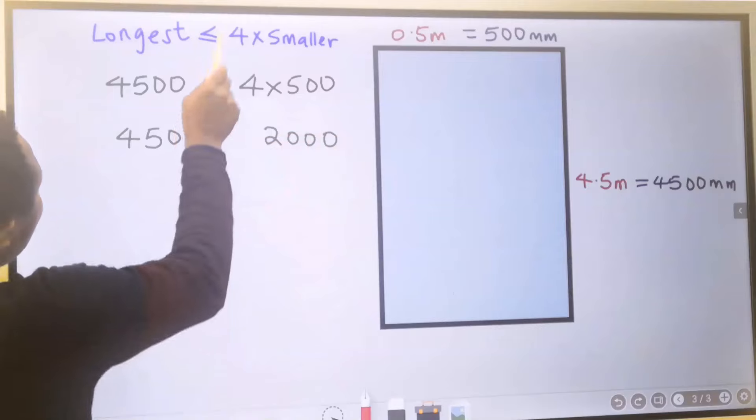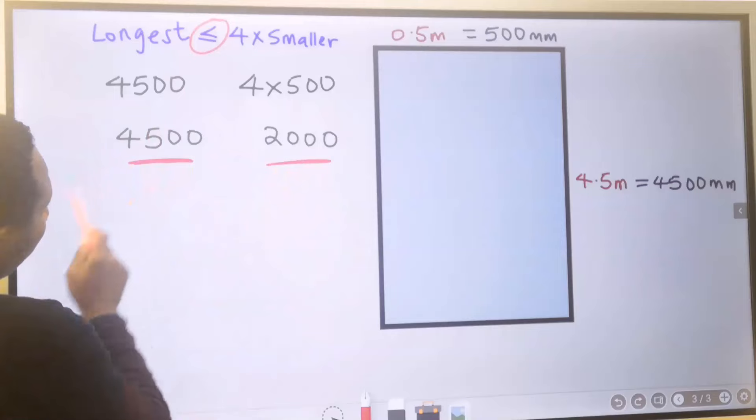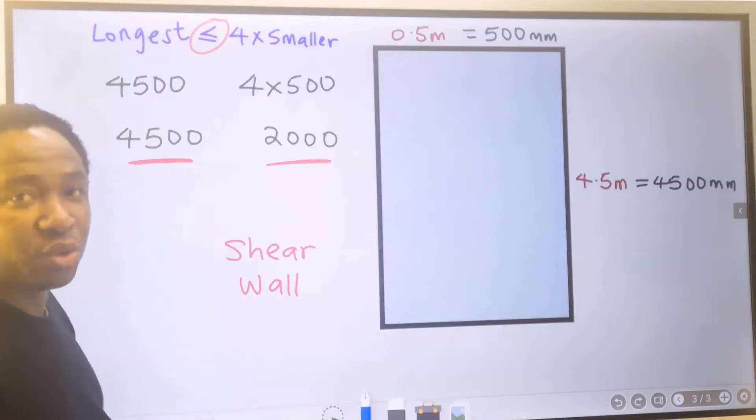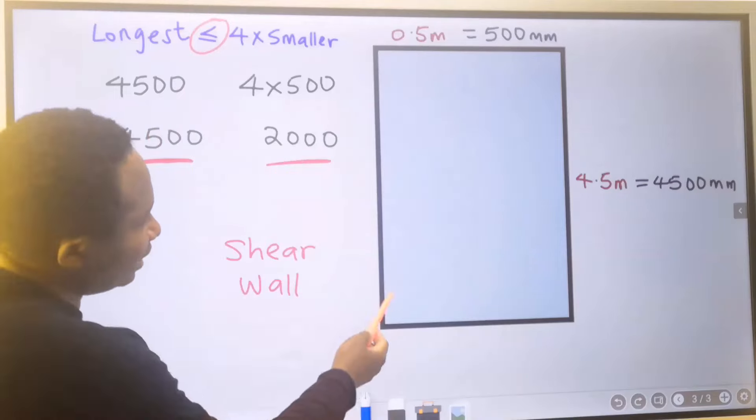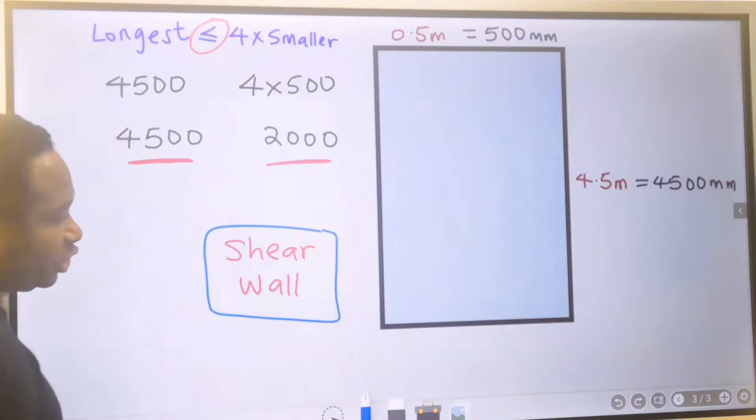And if we check with this condition, this is not greater than this. According to the code, we cannot design this as a column footing. This will be designed as a shear wall.